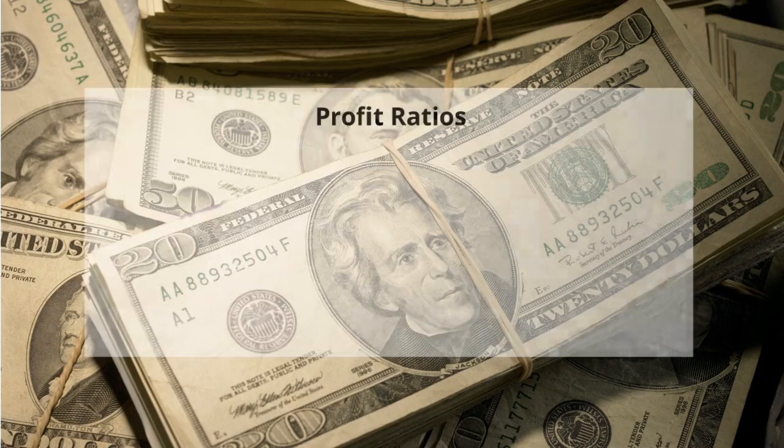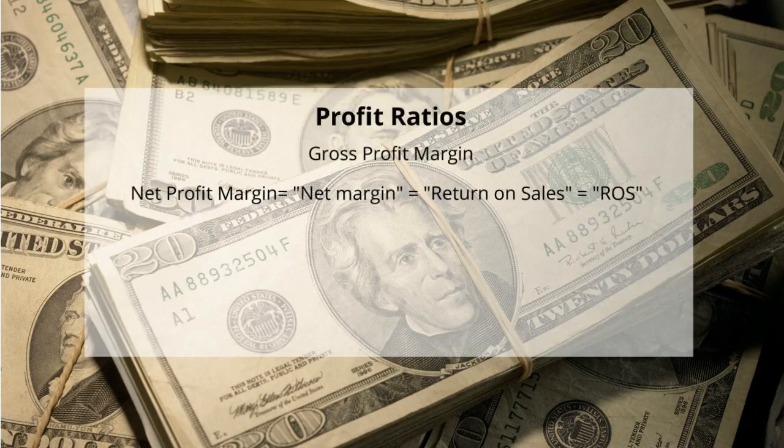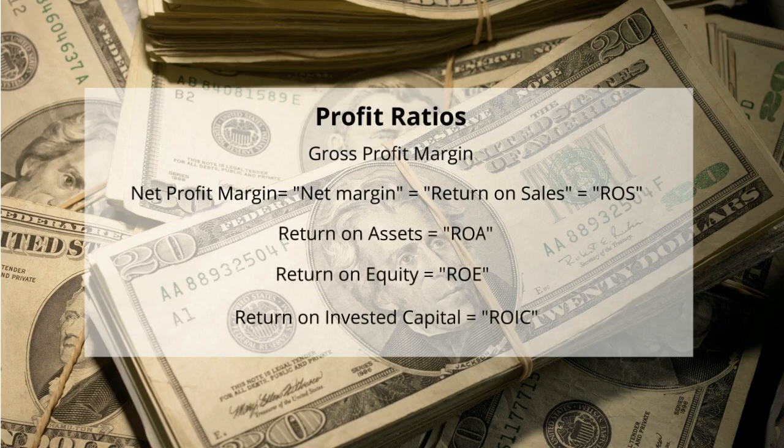The main profit ratios we will use are the gross profit margin, the net profit margin — also called net margin, return on sales, or ROS — return on assets, also called ROA, return on equity, which is called ROE, and return on invested capital, which is called ROIC.